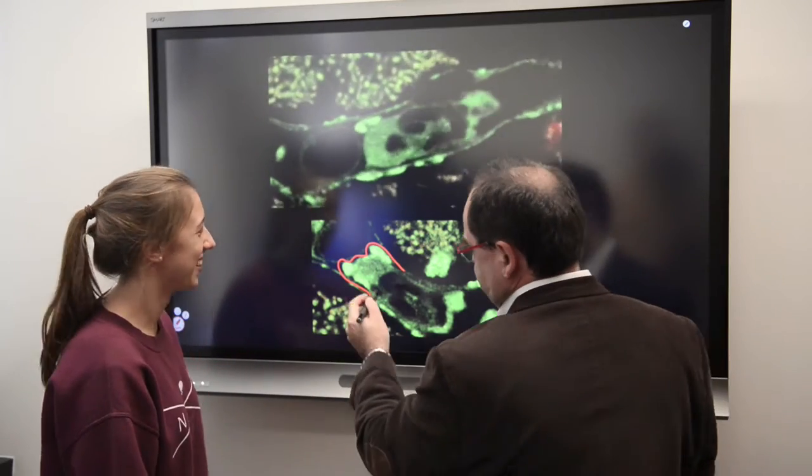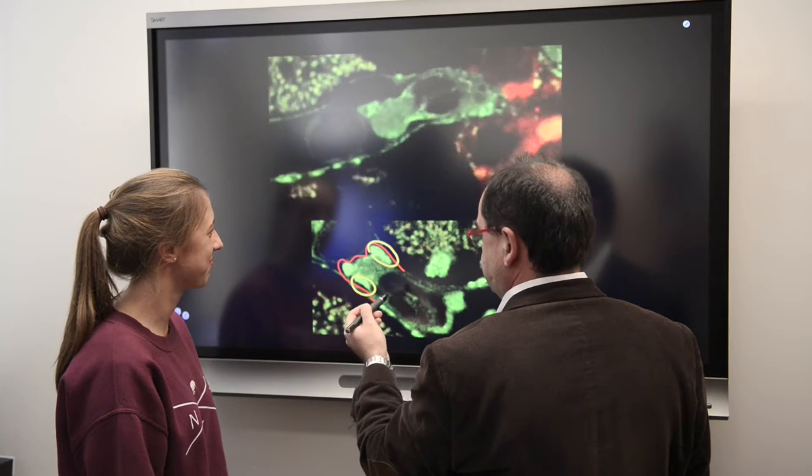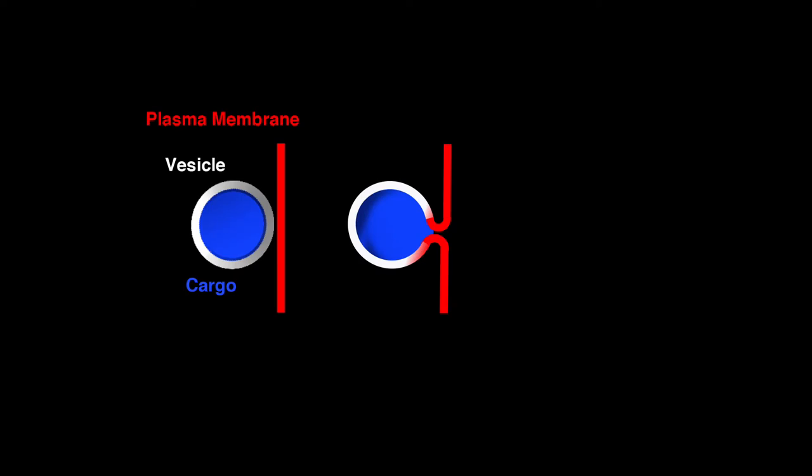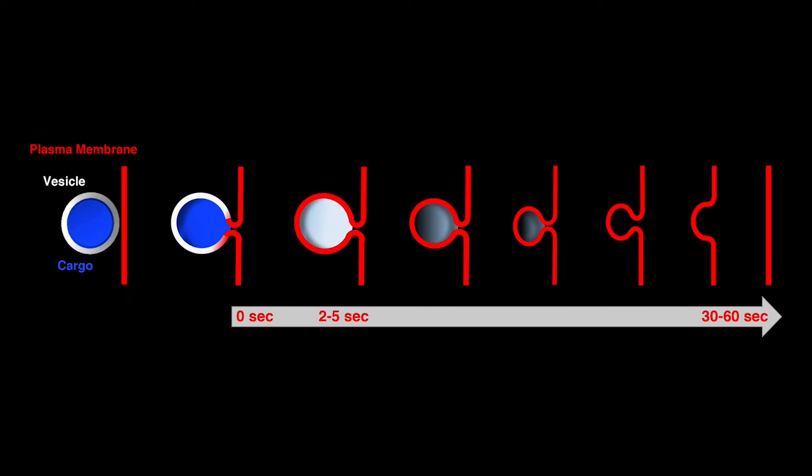When you eat, the pancreas and the salivary glands secrete all the enzymes that you need to digest food. These enzymes are stored in large vesicles that fuse with the plasma membrane. We found that after the enzymes are released outside the cells, the membranes of the vesicles are inserted and absorbed into the plasma membrane. We call this process integration.